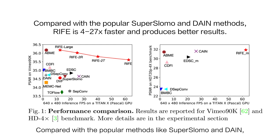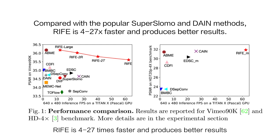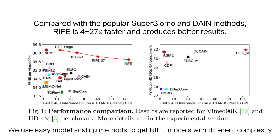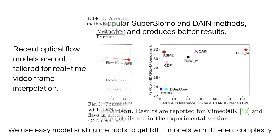Compared with popular methods like SuperSlomo and DAMN, RIFE is 4 to 27 times faster and produces better results. We use easy model scaling methods to get RIFE models with different complexity.